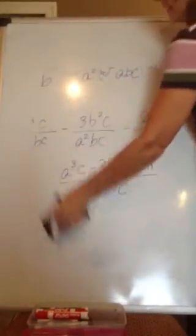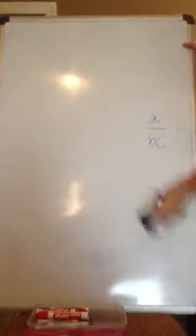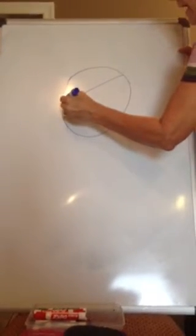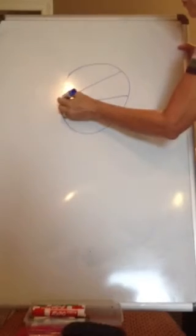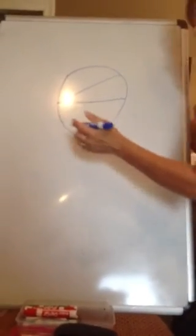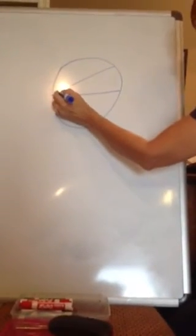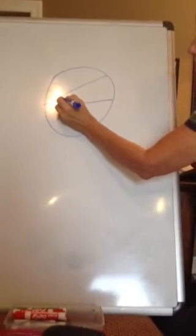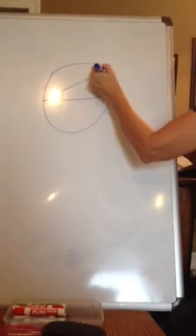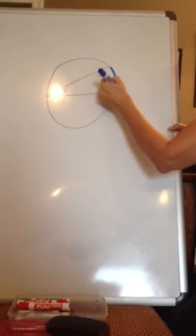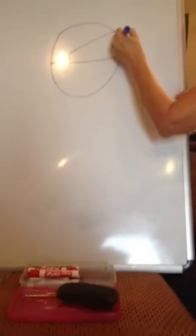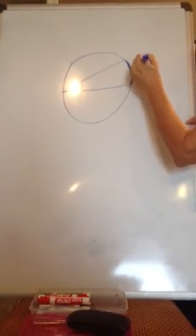The second part of the lesson deals with inscribed angles. If you'll remember from geometry, an inscribed angle is an angle that is inscribed or lies on the circle. And if this angle is 30 degrees, then the arc that it intercepts is twice the inscribed angle, which is 60 degrees.